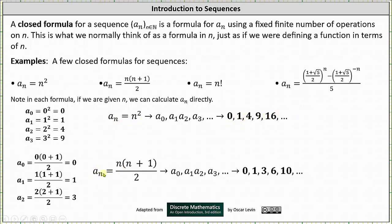Next we have a sub n equals n times (n plus one) divided by two. To find a sub zero we substitute zero for n, which gives us zero. To find a sub one we substitute n equals one, which gives us one. To find a sub two we substitute n equals two, which gives us three, and so on. You may want to pause the video and verify you can generate the terms of these sequences accurately.